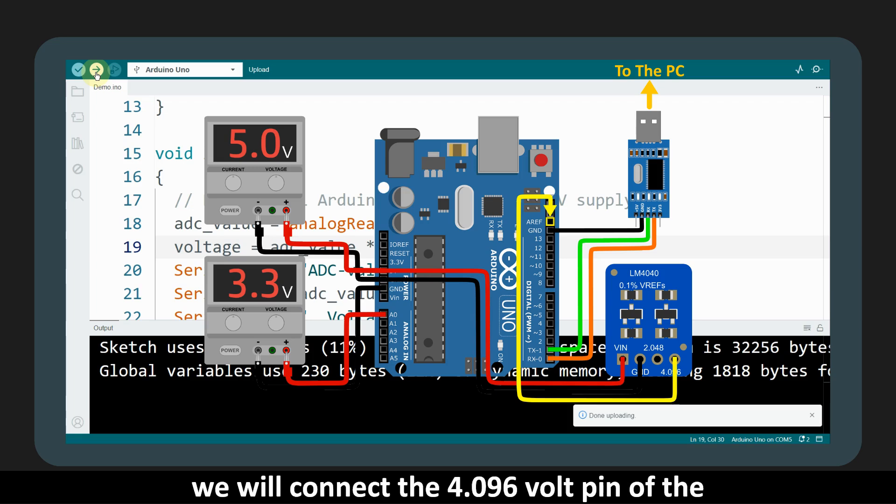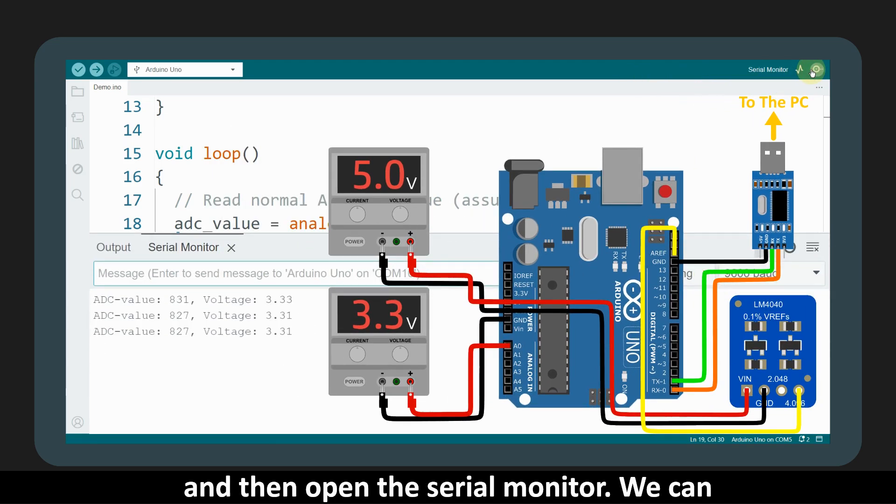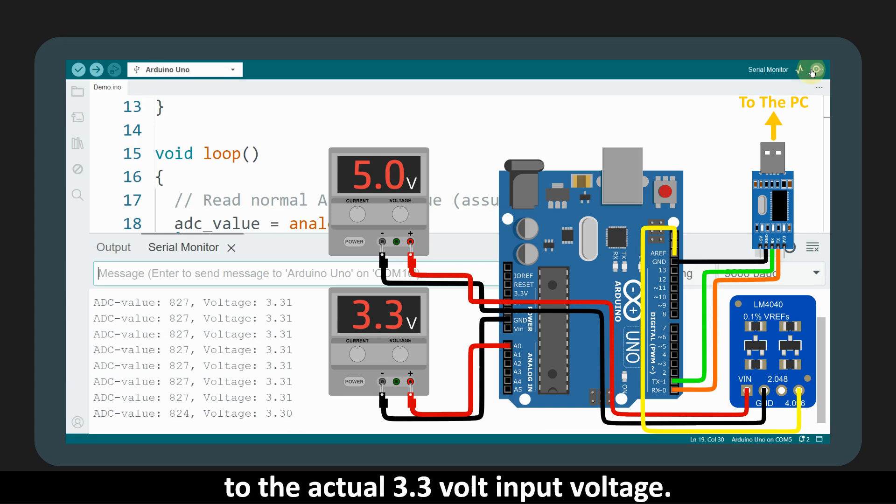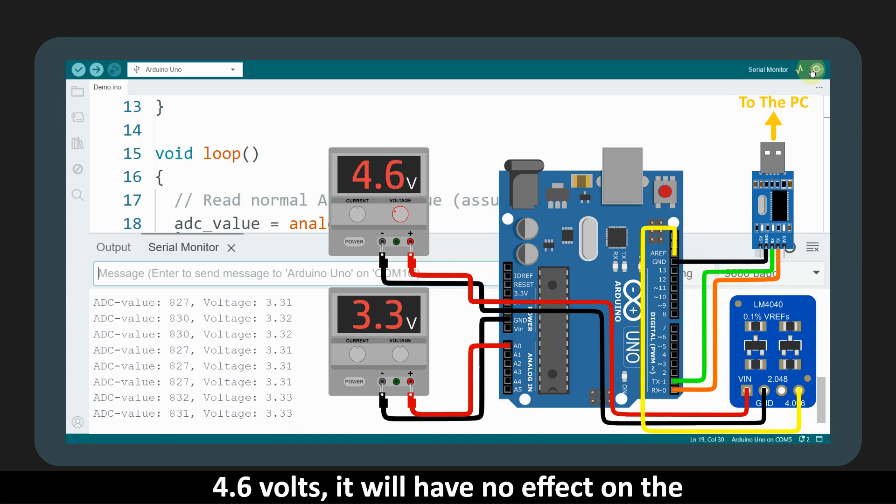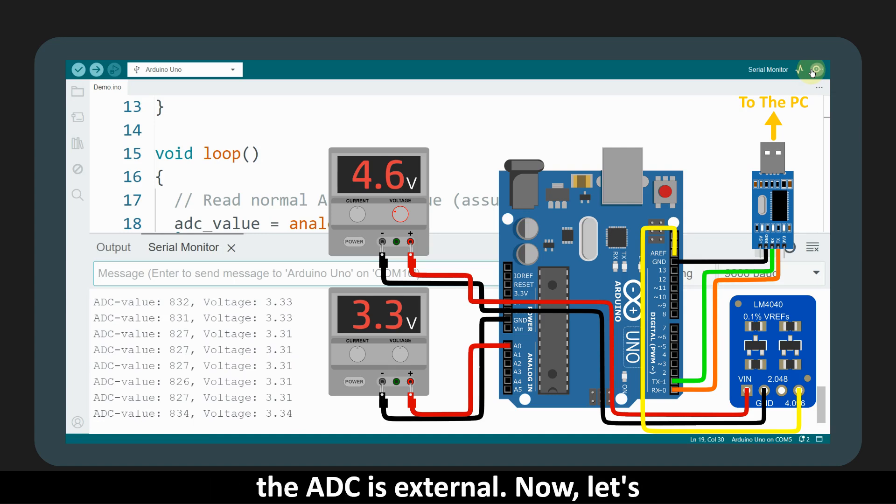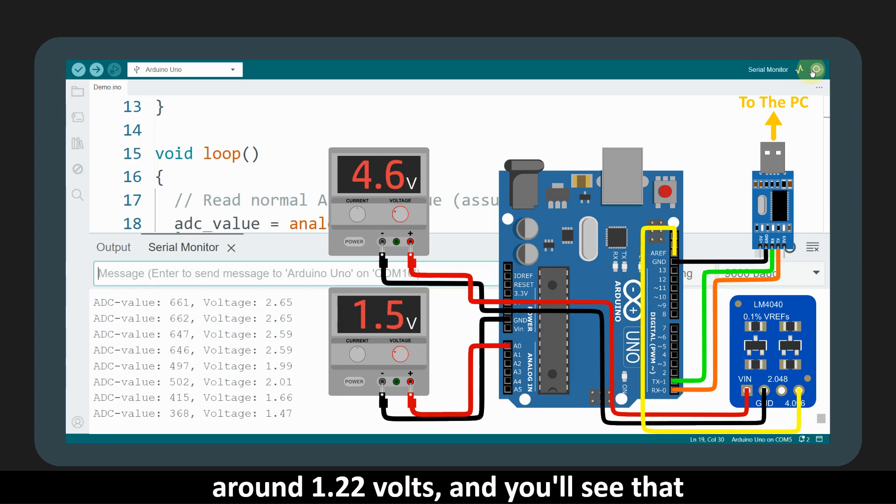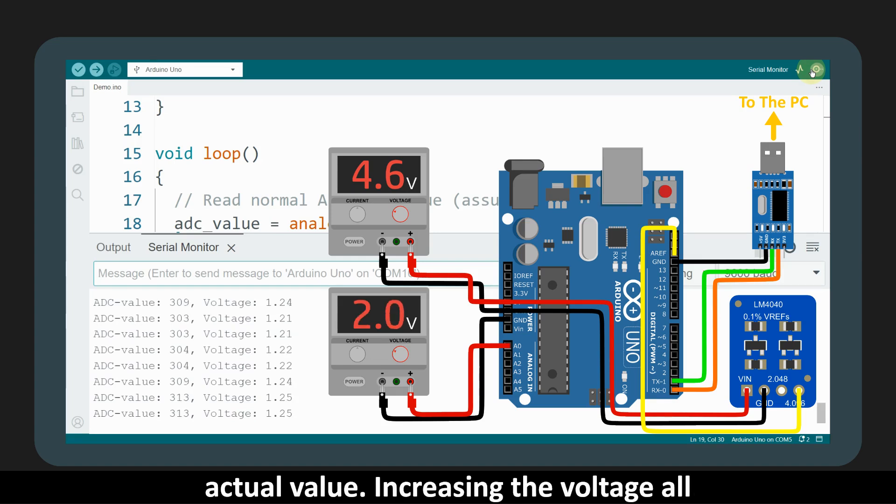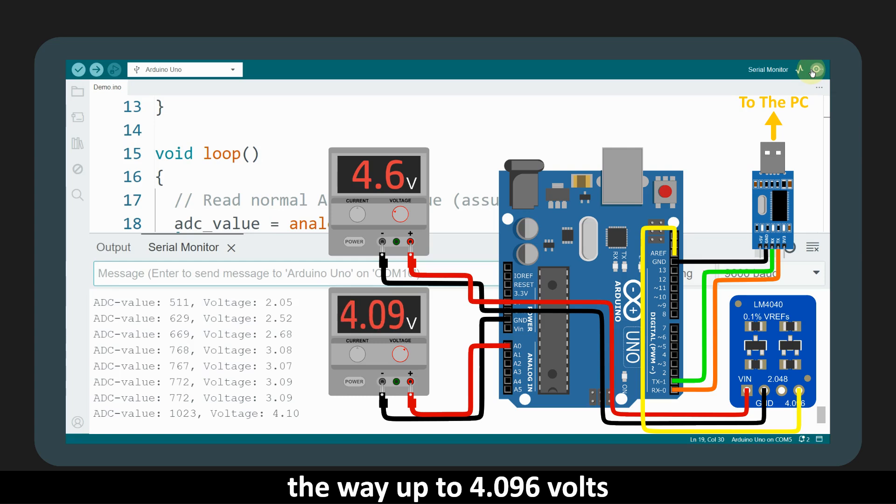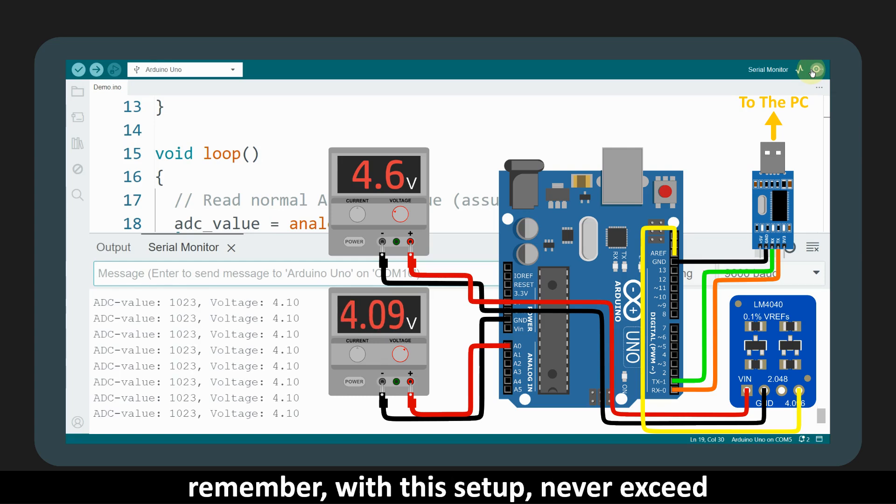After a successful upload, we will connect the 4.096 volt pin of the module to the AREF pin of the Arduino, and then open the serial monitor. We can see now our ADC values are pretty close to the actual 3.3 volt input voltage. Now, if we decrease the supply voltage to 4.6 volts, it will have no effect on the ADC readings as the reference voltage for the ADC is external. Now, let's lower the input voltage from 3.3 volts to around 1.22 volts, and you'll see that the ADC readings remain very close to the actual value. Increasing the voltage all the way up to 4.096 volts still gives accurate readings. But remember, with this setup never exceed this voltage, as currently this is our reference voltage, and we can't measure voltages higher than the reference voltage.